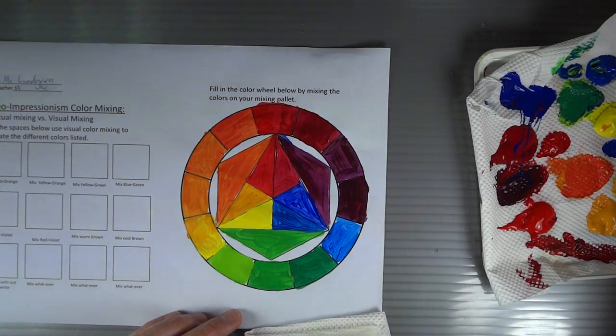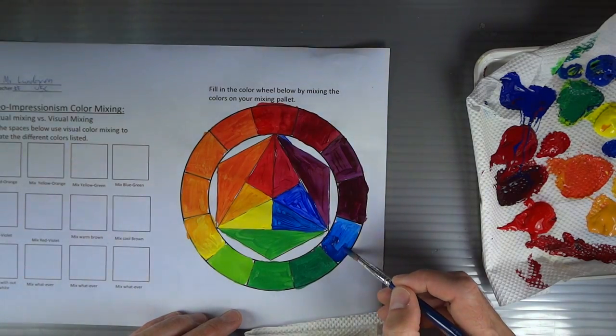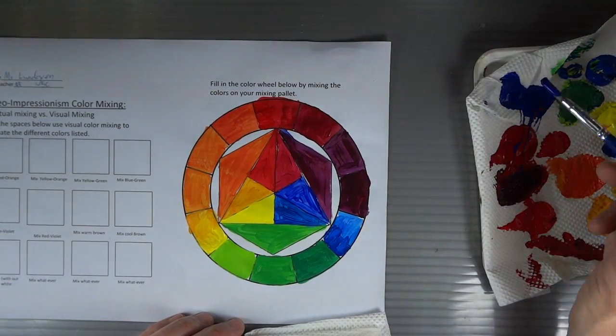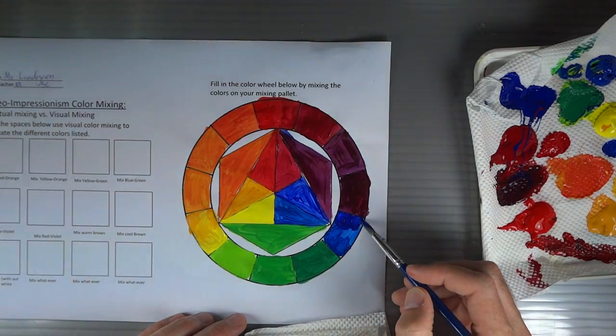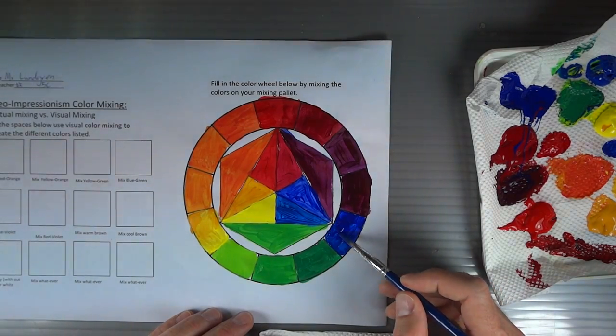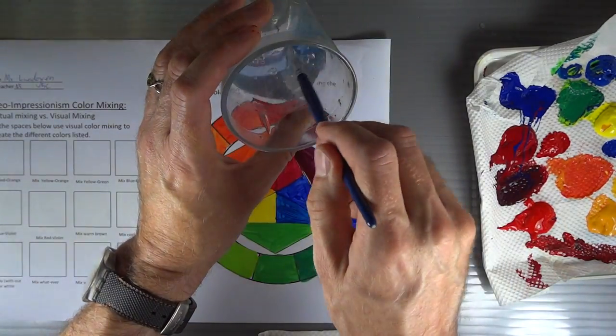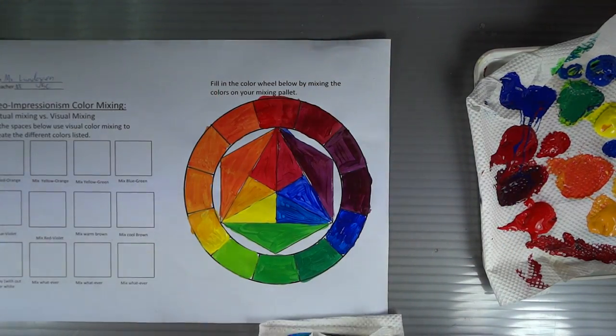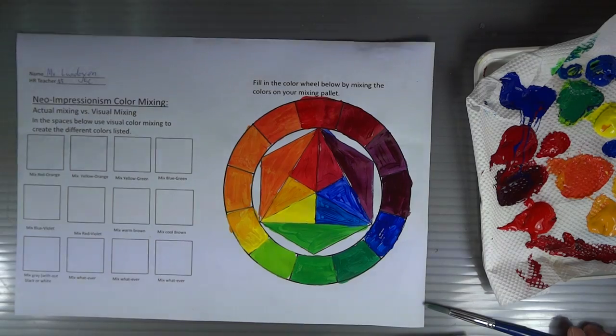Now I'm going to take my cool blue and paint it on the cool side. Wipe my brush off, take my warm blue, paint it on the warm side. Wipe my brush off and blend those two into the center so we've got cool on one side and warm on the other side. When you're done make sure you wash your brush out really well and clean up all your supplies. That concludes how to mix the color wheel with the warm and cool versions of the primaries.